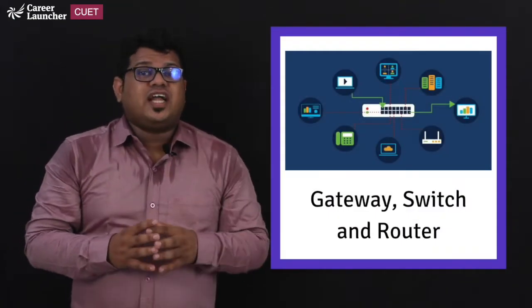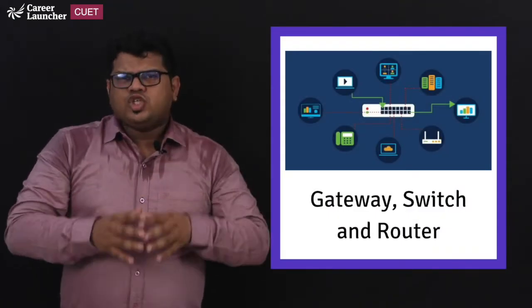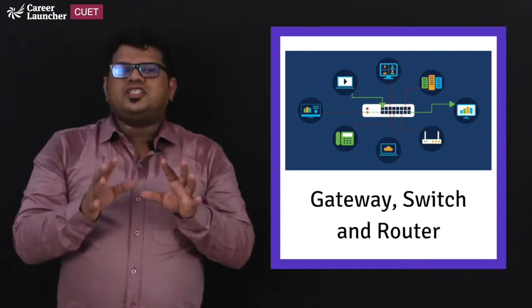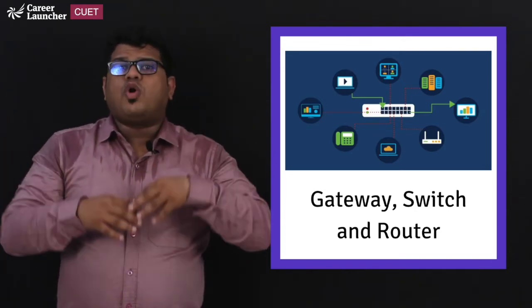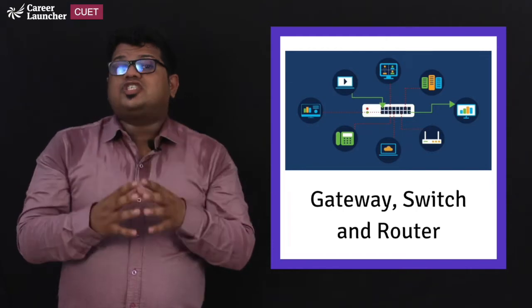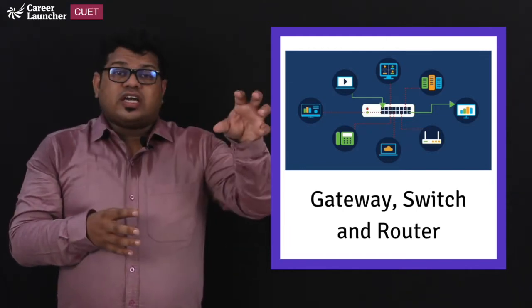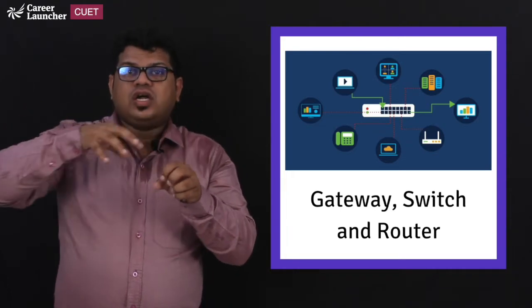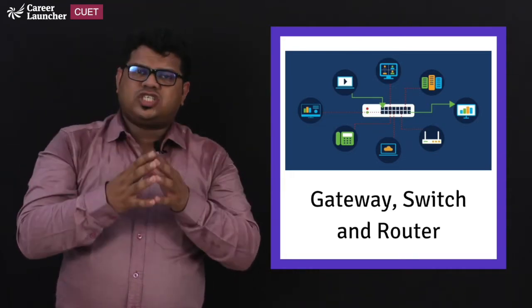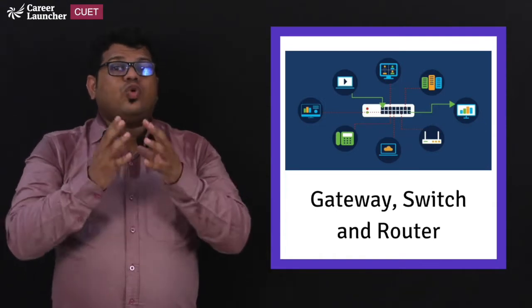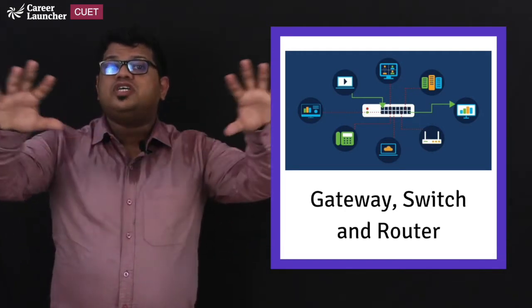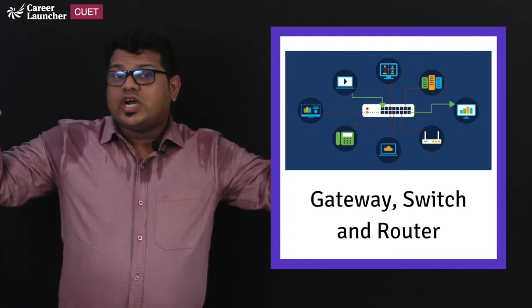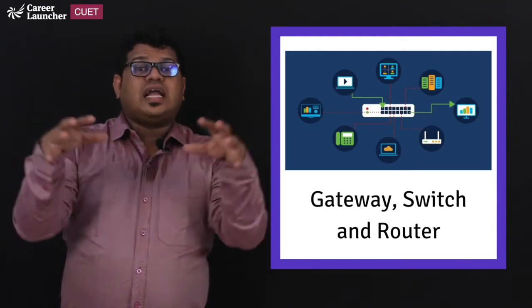And coming to the next part we have router, switch, and gateway. So gateway is very simple. A device that is going to take care of all the entering and exiting of the signals. A small monitoring system. And whereas switch is going to act as a part receiving and sending to particular destination. Whereas this router is going to play the main role where it receives all the data and it is going to disperse for all the computers or computing devices that comes under this network.